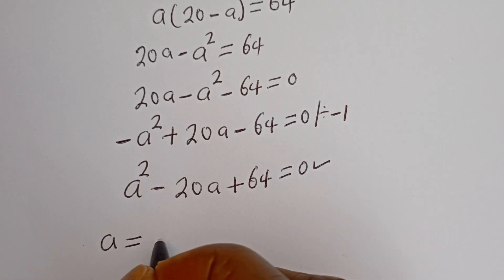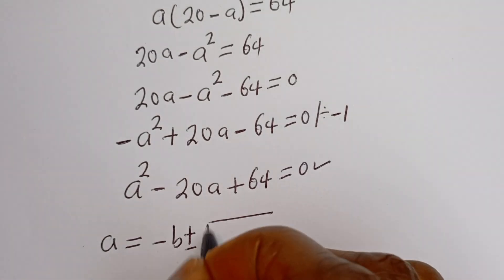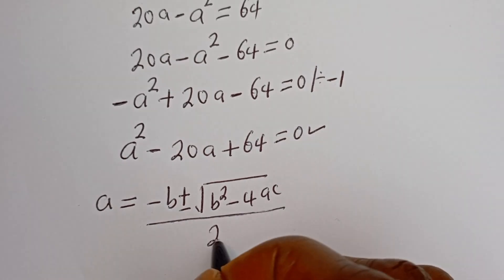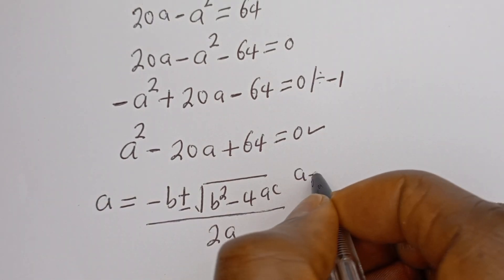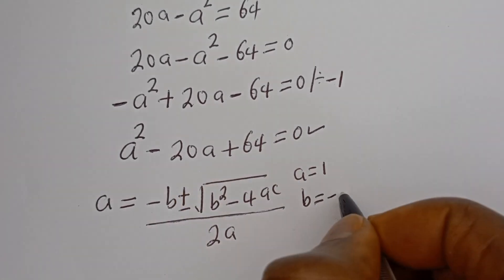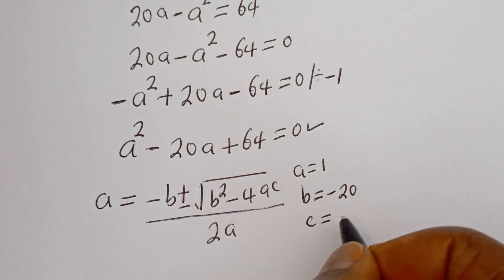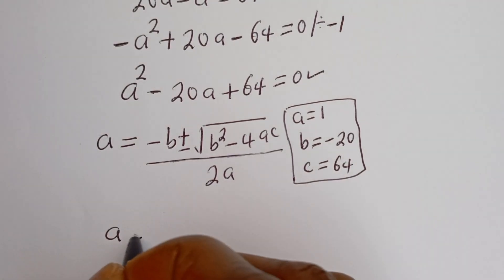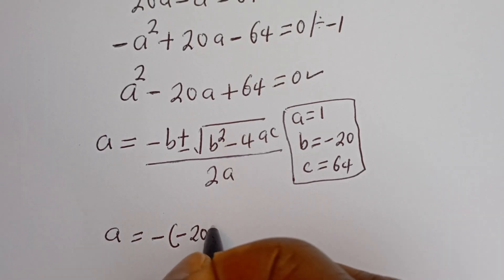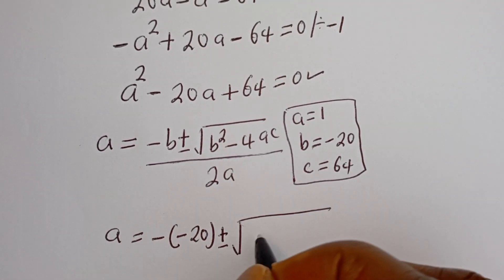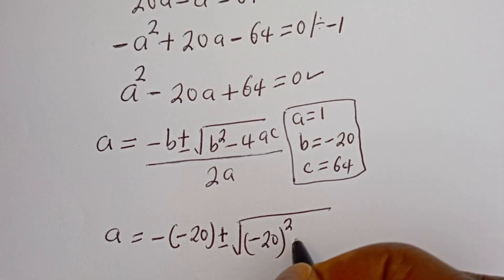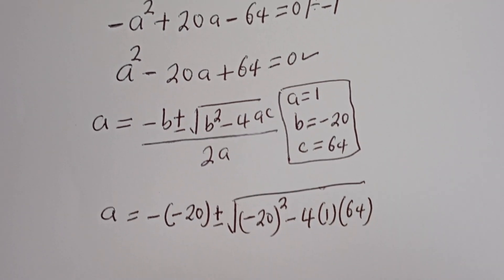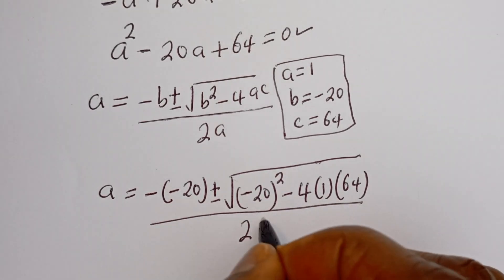a is equal to minus b plus or minus square root of b squared minus 4ac, all over 2a. From here, a is equal to 1, b is equal to minus 20, and c is equal to 64. So a is equal to minus (minus 20) plus or minus square root of (minus 20) squared minus 4 multiplied by 1 multiplied by 64, divided by 2 multiplied by 1.